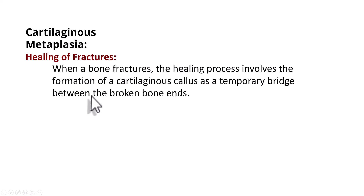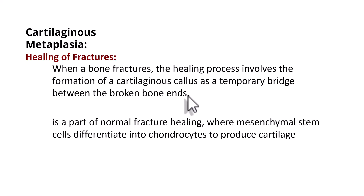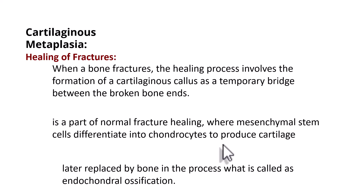The last example is cartilaginous metaplasia. During the process of healing of fractures, there is formation of a cartilaginous callus, which is a temporary bridge between the broken ends — that is cartilaginous metaplasia. This is part of normal fracture healing, where mesenchymal stem cells differentiate into chondrocytes, and these chondrocytes produce cartilage. Later it will be replaced by bone — that is what we call endochondral ossification.